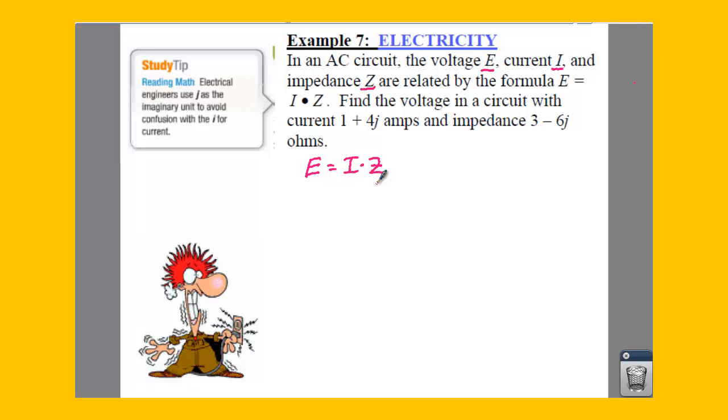So, in order to find your voltage in a circuit with a current of 1 plus 4J amps and impedance of 3 minus 6J ohms, what we have to do is plug everything in where it should go.